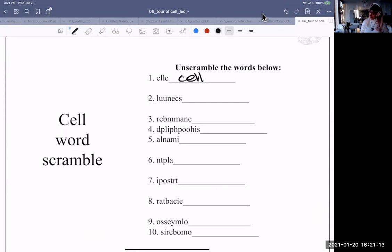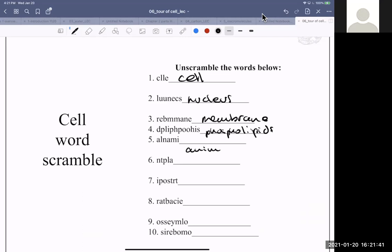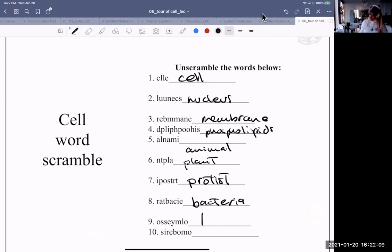Cell. Second one? Nucleus. Nucleus. The third one? Membrane. Good. You can all chime in for these ones if you want. The fourth one? Phospholipid. Phospholipids. Fifth one? Animal. The type of cell. Animal. Six. Plants. Seven. Protus. Protus. Good. Eight. Bacteria. Bacteria. Nine. Lysosome. Lysosome. And ten? Ribosome or ribosome. Nice.